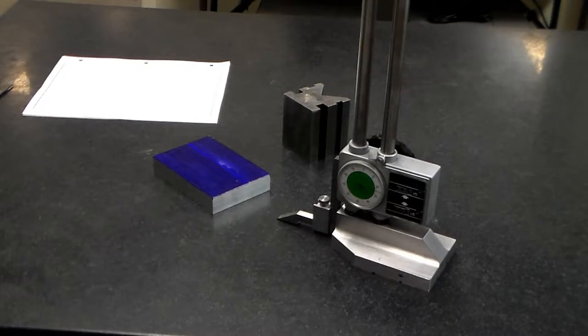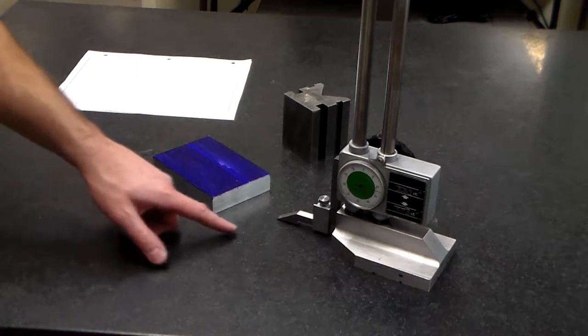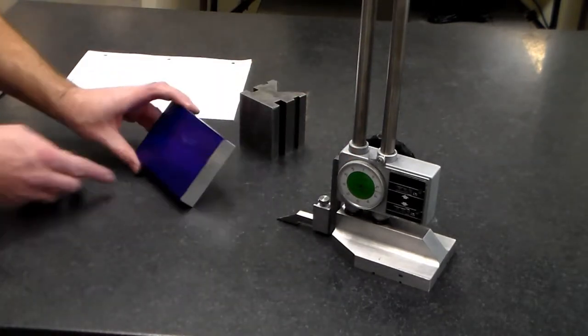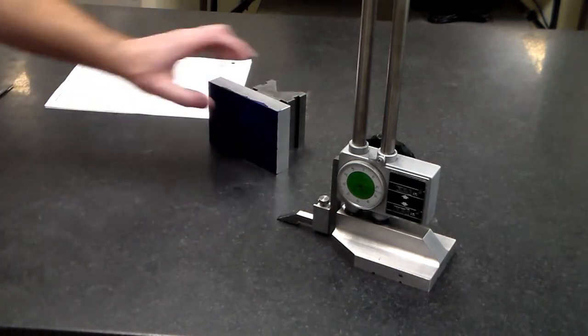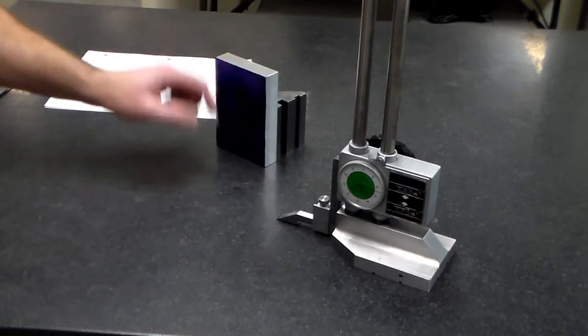All right, so here I am. I have my print, my part - it's got the bluing on it. I've already cleaned and zeroed out the height gauge and I'm going to be using this little v-block as something to help stabilize my part while I'm scribing my lines across the surface of the part.